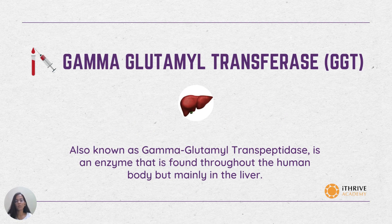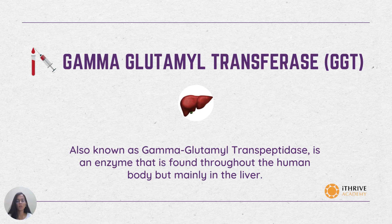Finally, gamma-glutamyl transferase, GGT. Another name for GGT is gamma-glutamyl transpeptidase. GGT is an enzyme that is found throughout the human body but mainly in the liver. GGT also helps in maintaining the concentration of glutathione, which is a potent antioxidant that fights against oxidative stress.